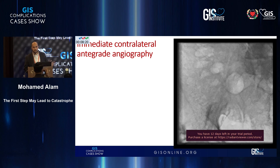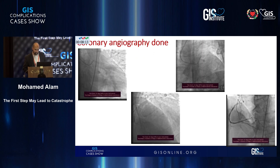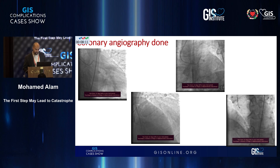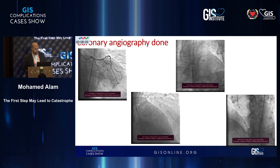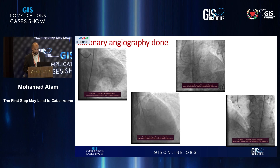So we performed coronary angiography first and then planned to deal with the limb situation. The coronary angiography showed non-significant lesions at the right coronary artery, non-significant lesions at the LCX, and a mid-segment thrombotic lesion in the LAD, but with TIMI-3 flow.